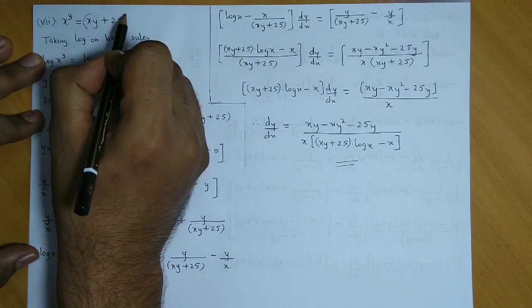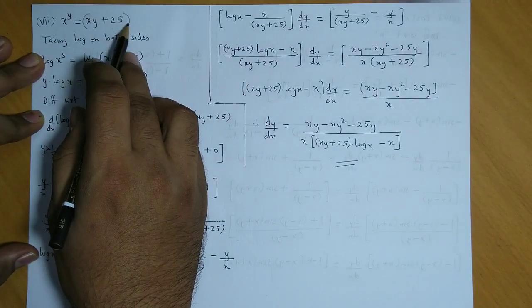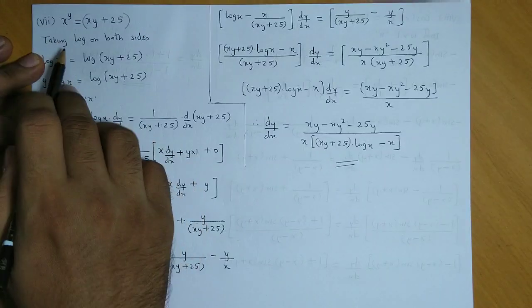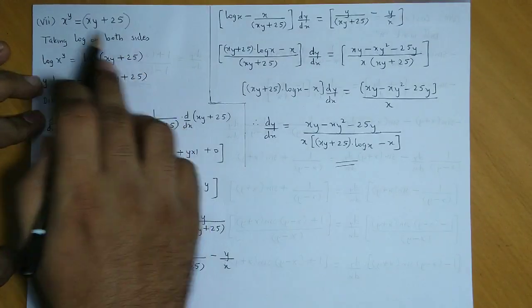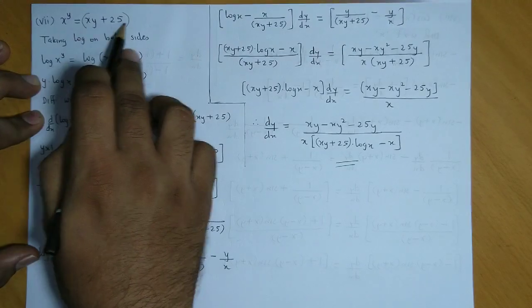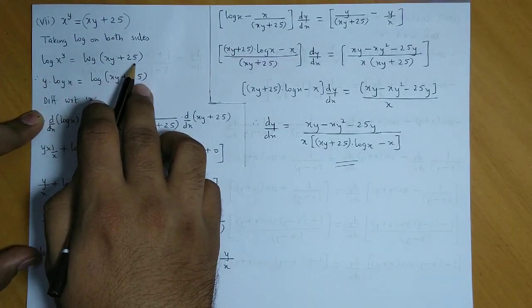But this term we consider a single term xy plus 25, because we don't have a rule for log of a plus b. So first of all you take log on both sides. Log of x raised to y is equal to log of xy plus 25.